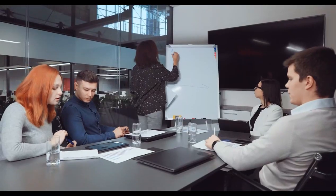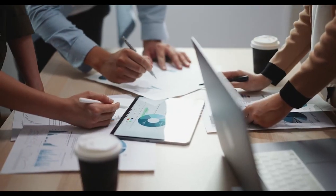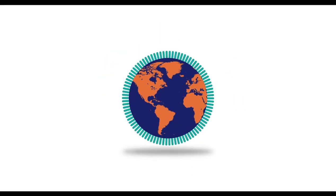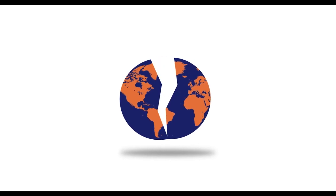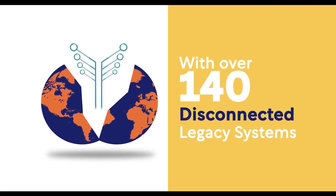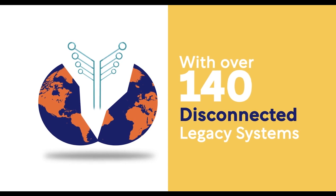Pega and Vertuso worked together on one of the world's largest insurers. At that time, they had a global claims process that had become fragmented with over 140 disconnected legacy systems across 90 countries.